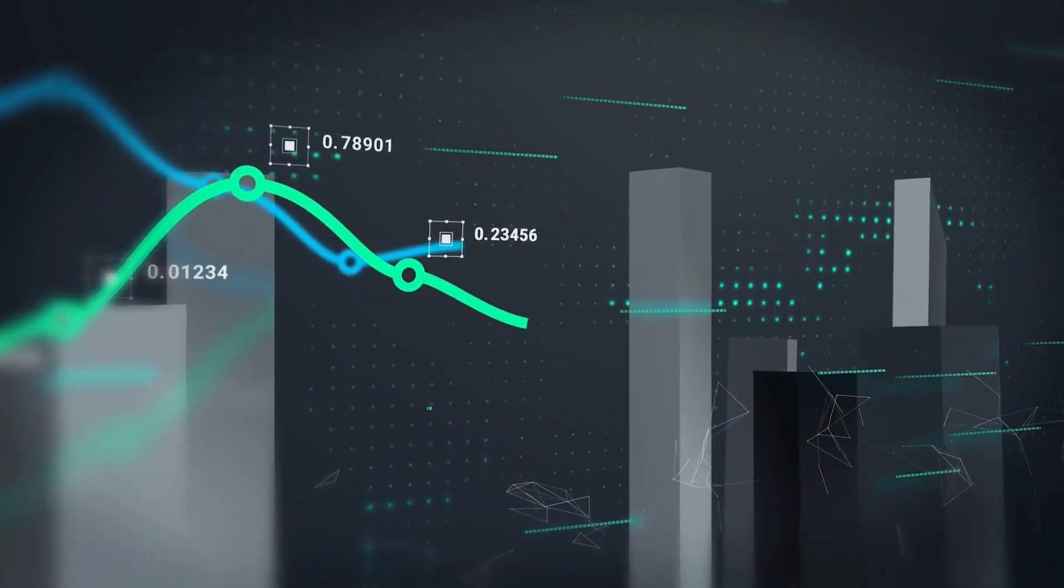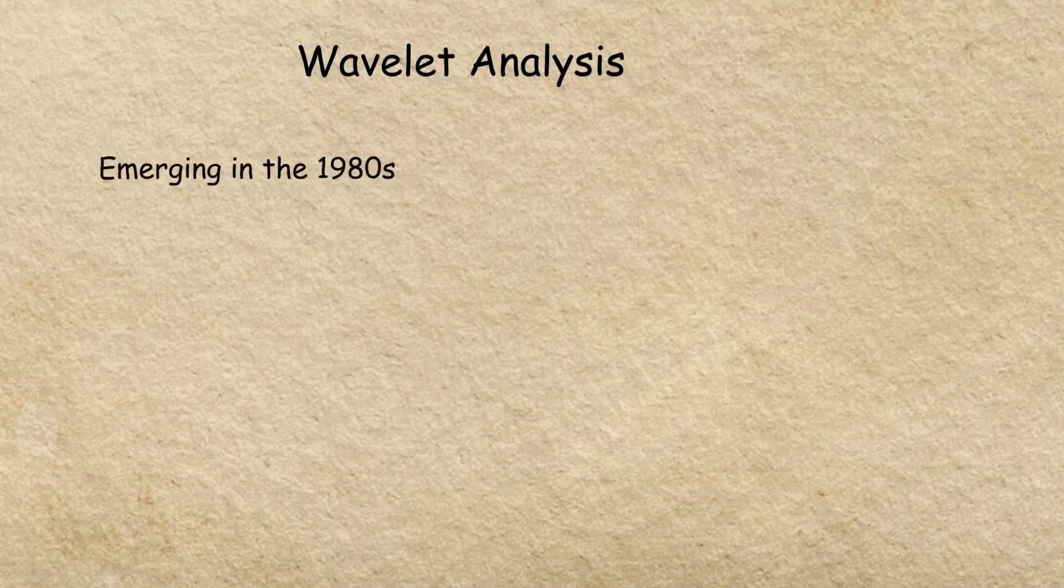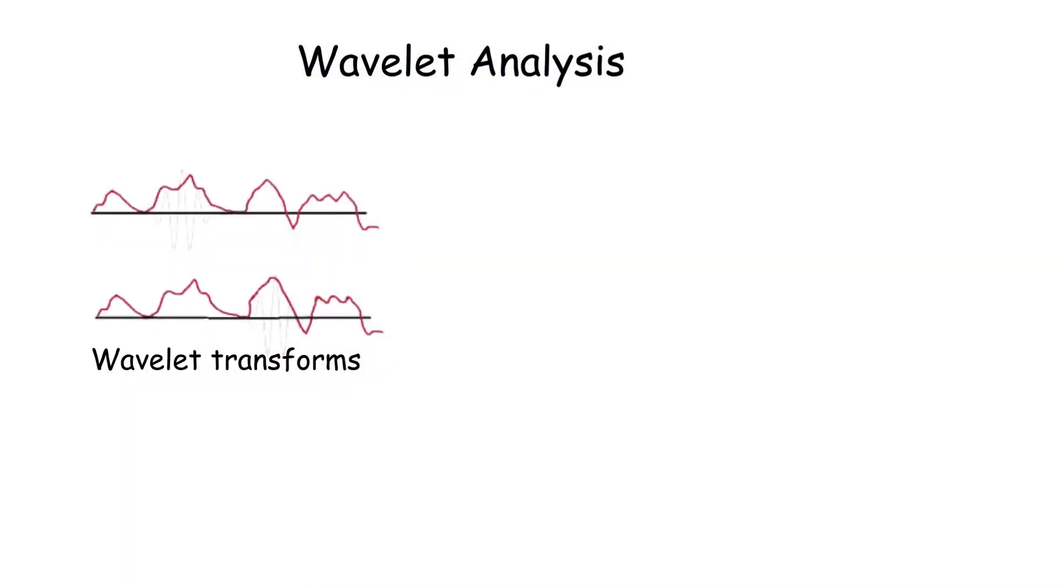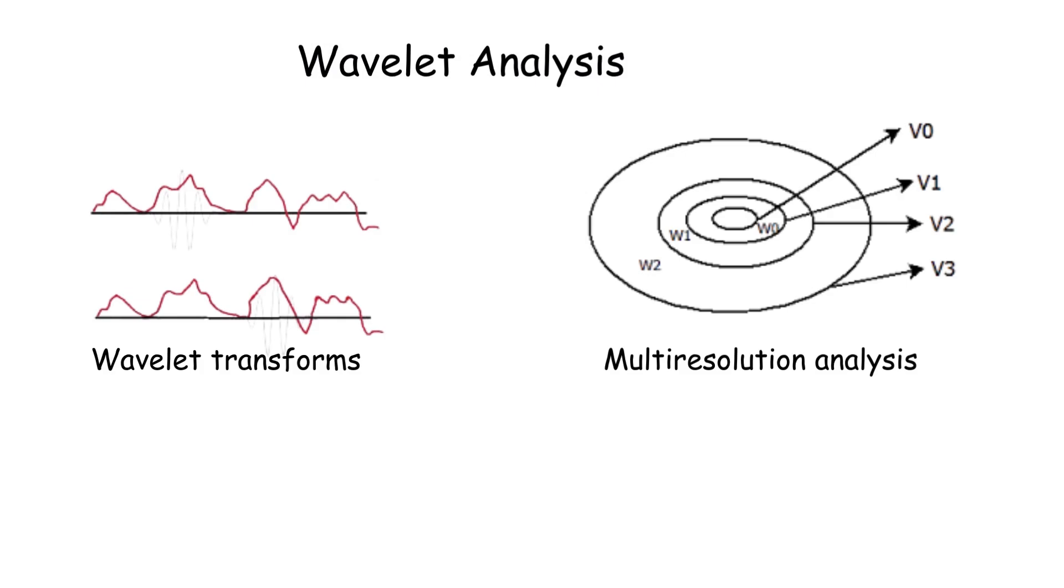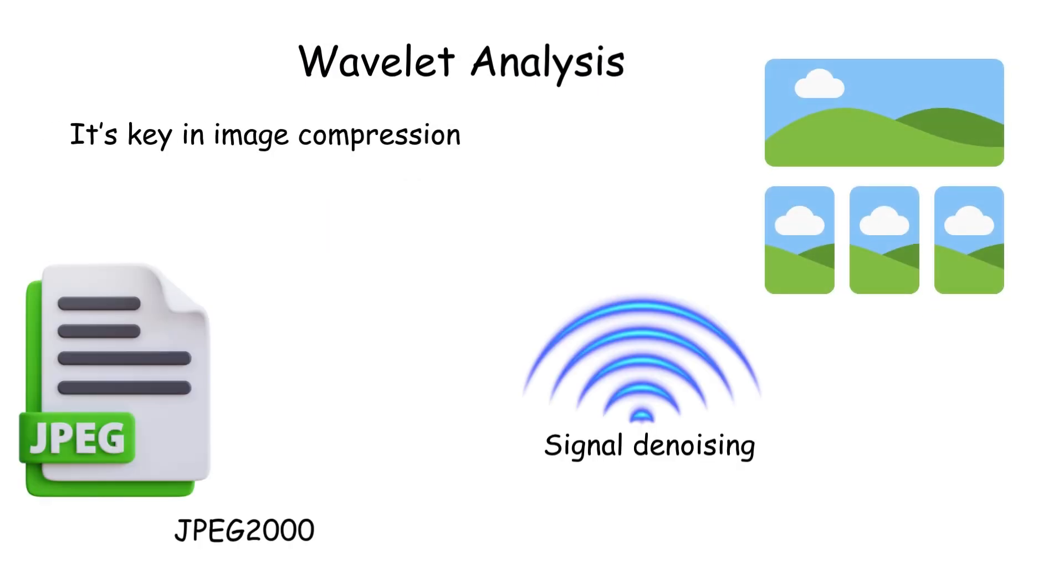Wavelet analysis decomposes signals into localized waves, offering a time-frequency view. Emerging in the 1980s, it uses wavelet transforms and multi-resolution analysis. It's key in image compression, like JPEG-2000 and signal denoising.